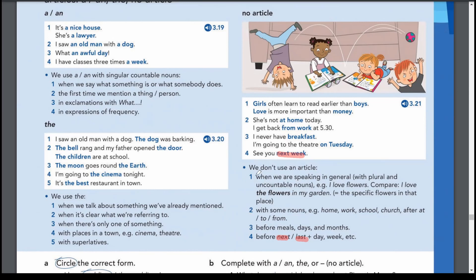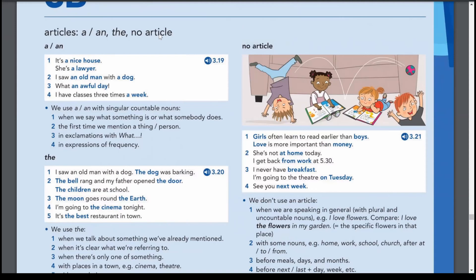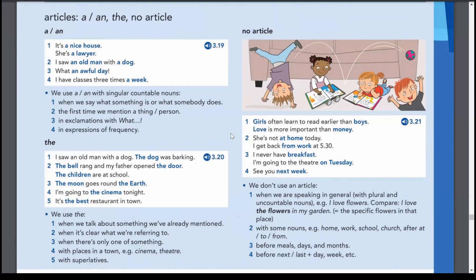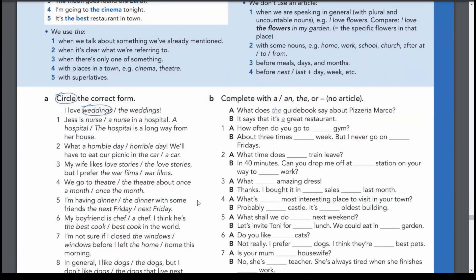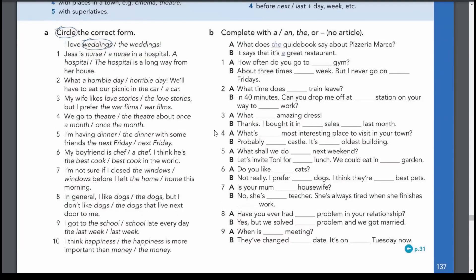That's a brief explanation of how to use articles at the intermediate level. If you understand this, try to memorize these rules — it's not just about understanding, it's about learning the details. Now for exercise A, 'circle the correct form': 'I love weddings' — we're talking generally, so no article. We don't say 'the weddings' because that would imply specific weddings, like weddings in Africa or Europe.